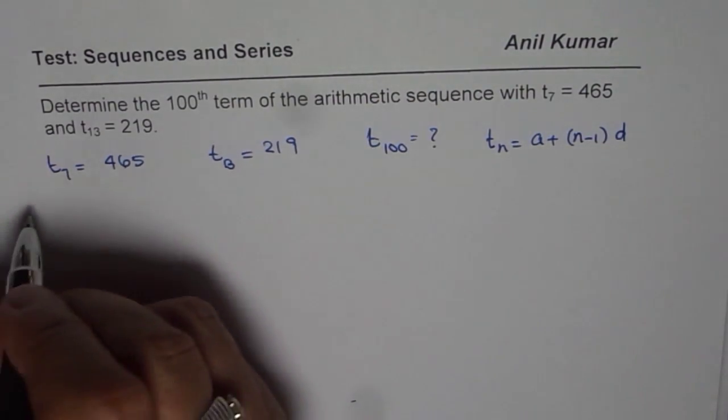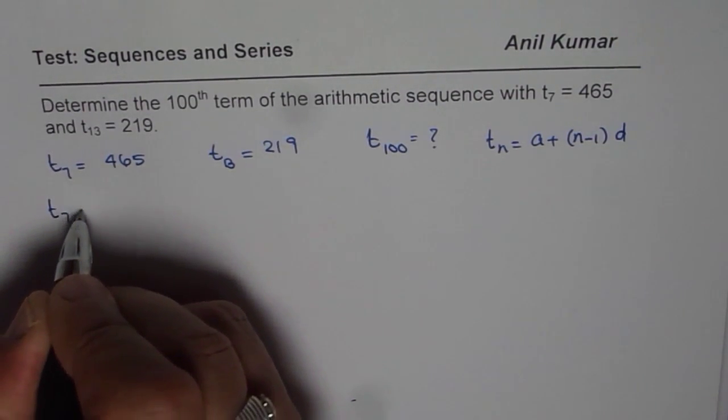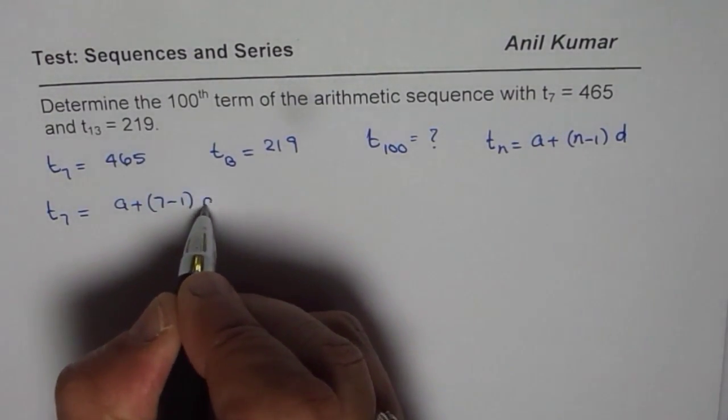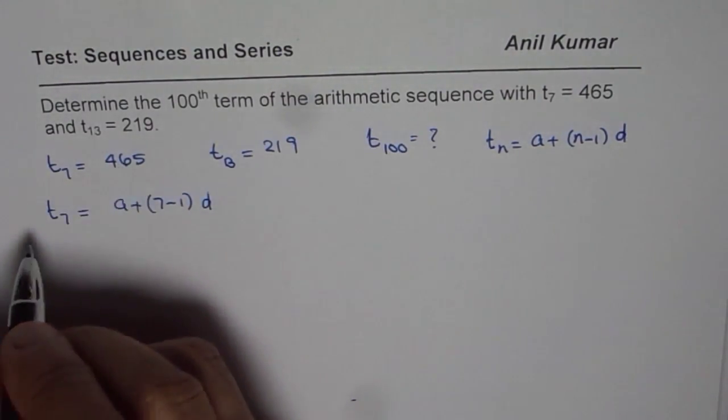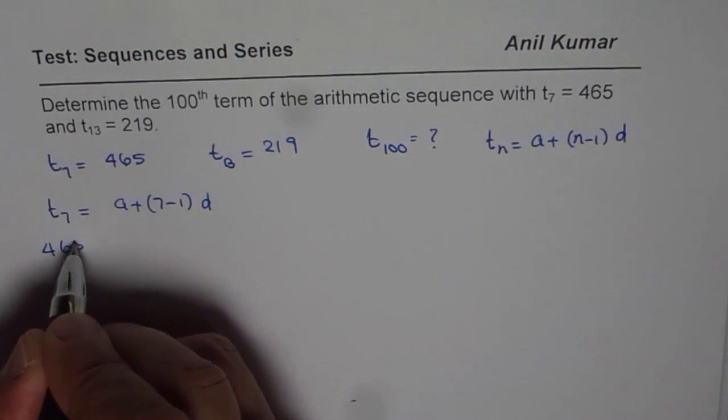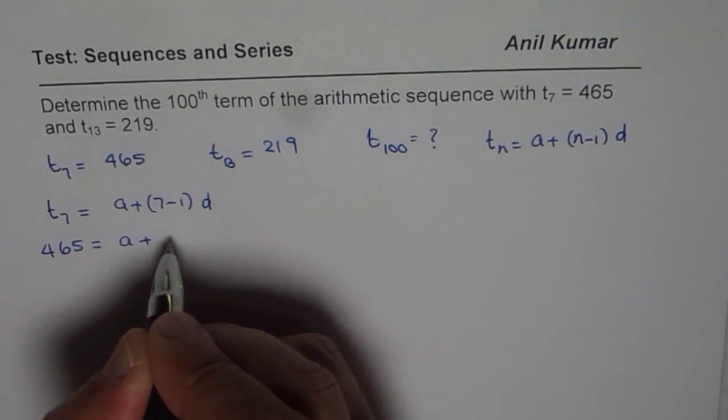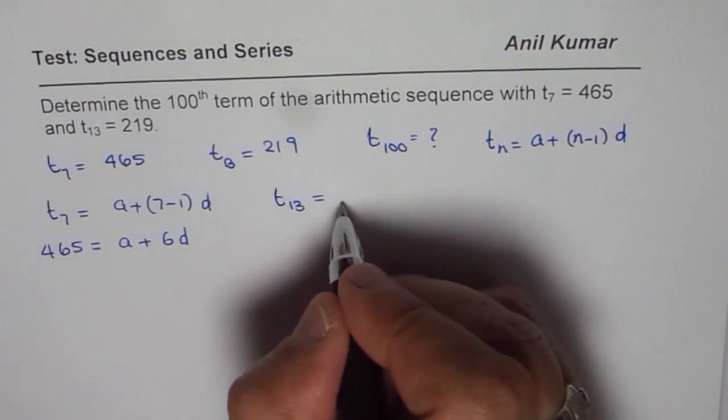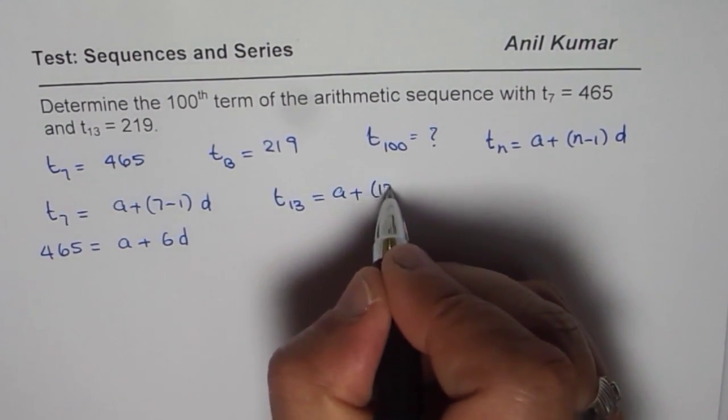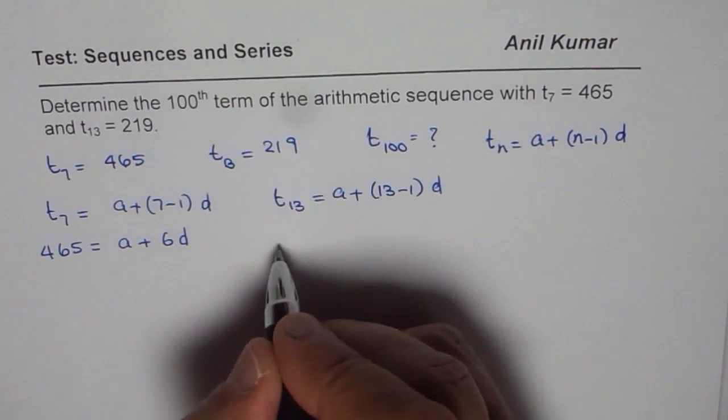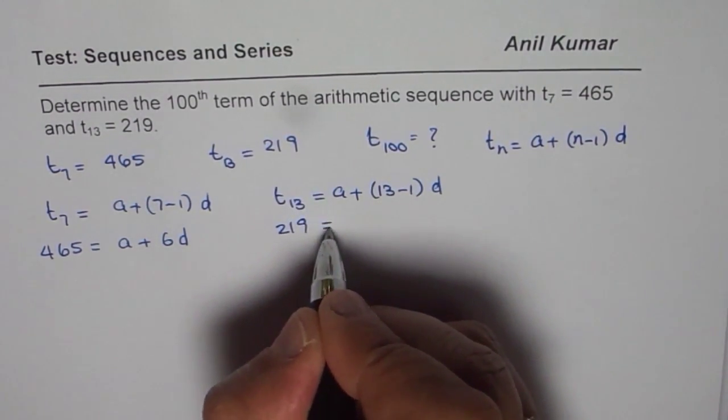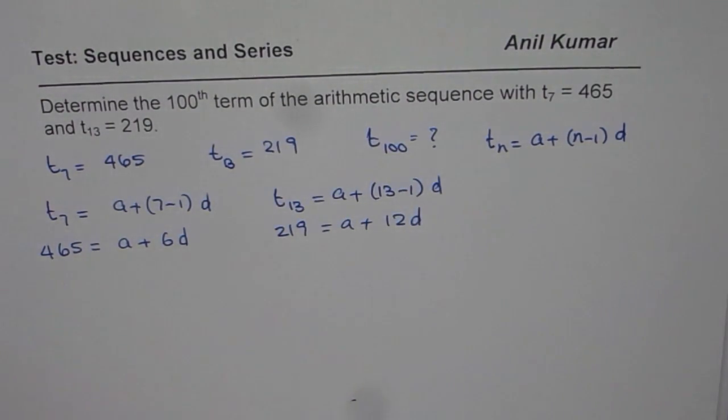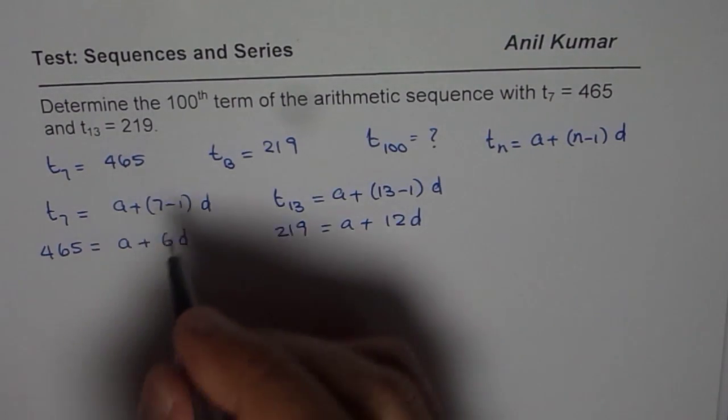So let's apply the formula. T7 equals A plus 7 minus 1 times D, and T7 is 465. So we get 465 equals A plus 6D. Here we know T13 equals A plus 13 minus 1 times D. T13 is 219, that equals A plus 12D. So we have two equations. Let's number them as 1 and 2.